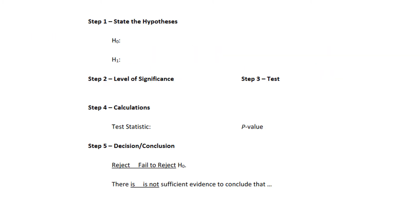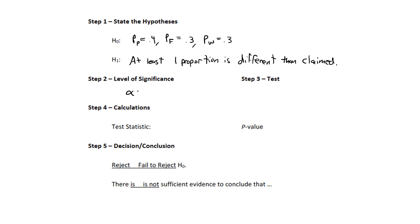The null hypothesis is: the proportion that passed is 0.4, the proportion that failed is 0.3, and the proportion that withdrew is 0.3. H sub 1 is that at least one proportion is different than claimed. The level of significance is 0.05, and this is a goodness of fit test. We'll go to StatCrunch to compute the test statistic and verify the conditions.